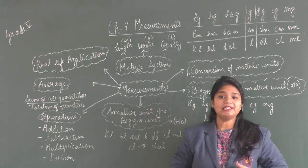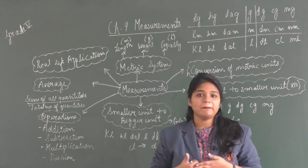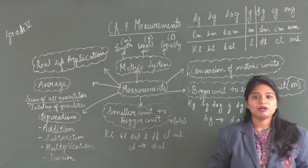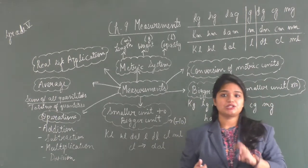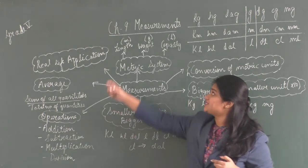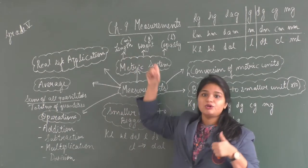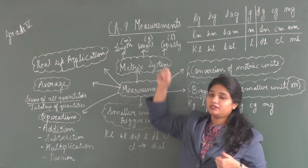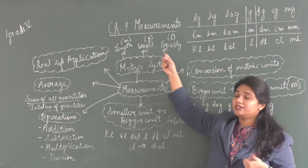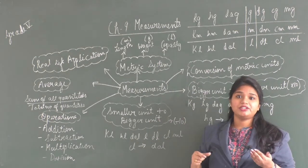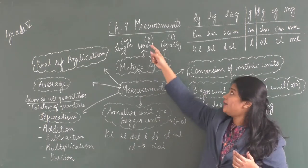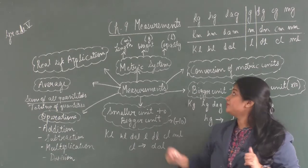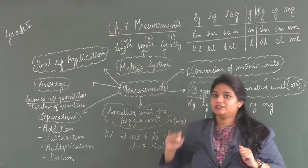We started the chapter by learning about the metric system — specifically the metric system of 3 units. The first was length, whose standard unit is meter. Then we learned about weight, whose standard unit is gram. And then we learned about capacity, whose standard unit is liter.